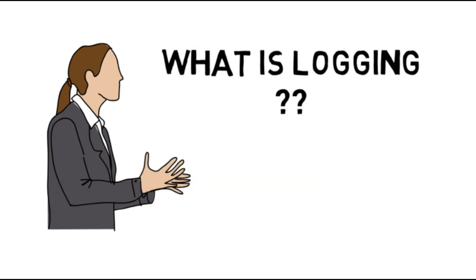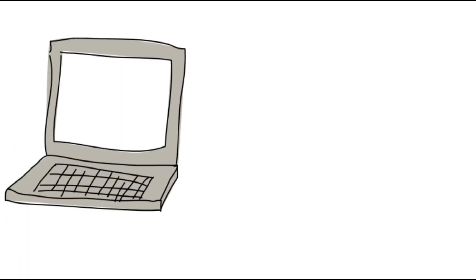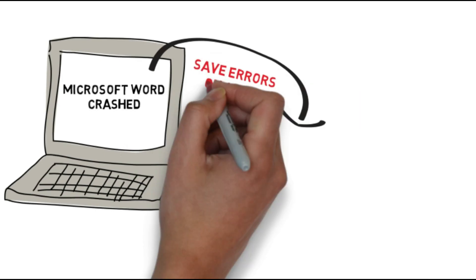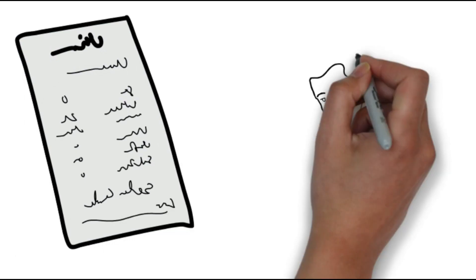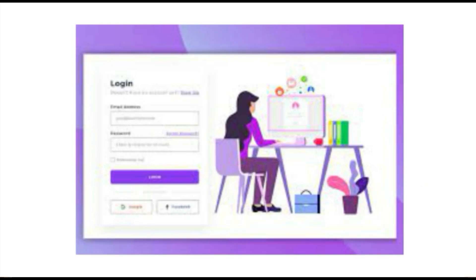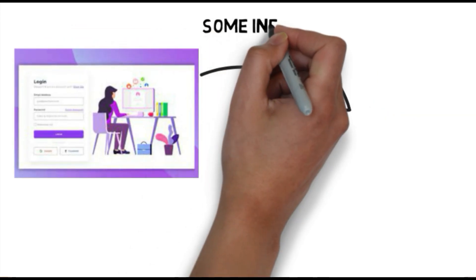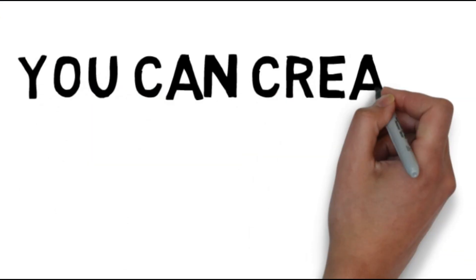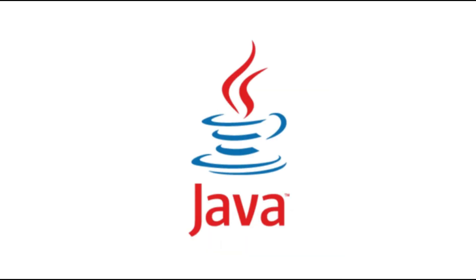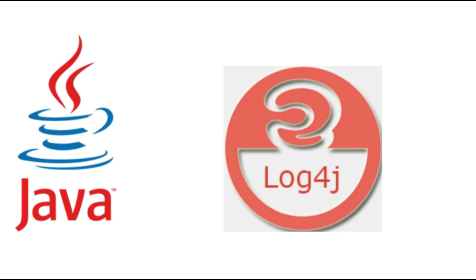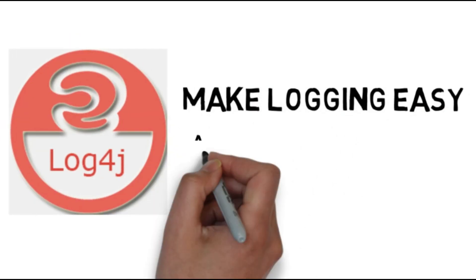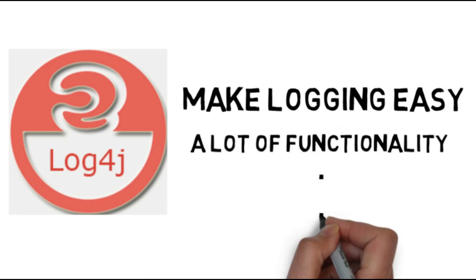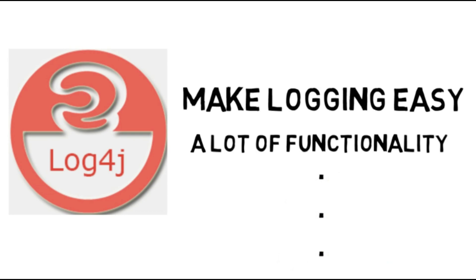The first thing we're going to talk about is what logging is. Basically, logging is saving information in files — this information includes software errors. For example, when software crashes we want to save errors to a log file so the developer can look at it and try to fix it. Or sometimes when you create an account in an application, the developer wants to save and log your information — like your IP address or user agent — in a log file. We could create code to perform this functionality, but there are libraries that do that for us. In Java, there is a library called Log4j, which is a framework that makes logging easy and has a lot of functionalities.